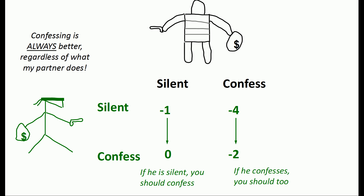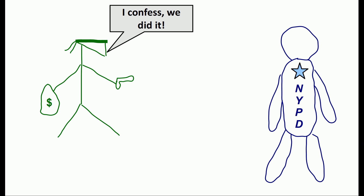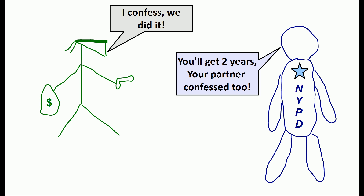This is known as a dominant strategy, and in game theory, when you have a dominant strategy, you should play it. So you find the cop and hurriedly explain that you confess. The cop then explains that you're going to serve two years, because your partner confessed as well.